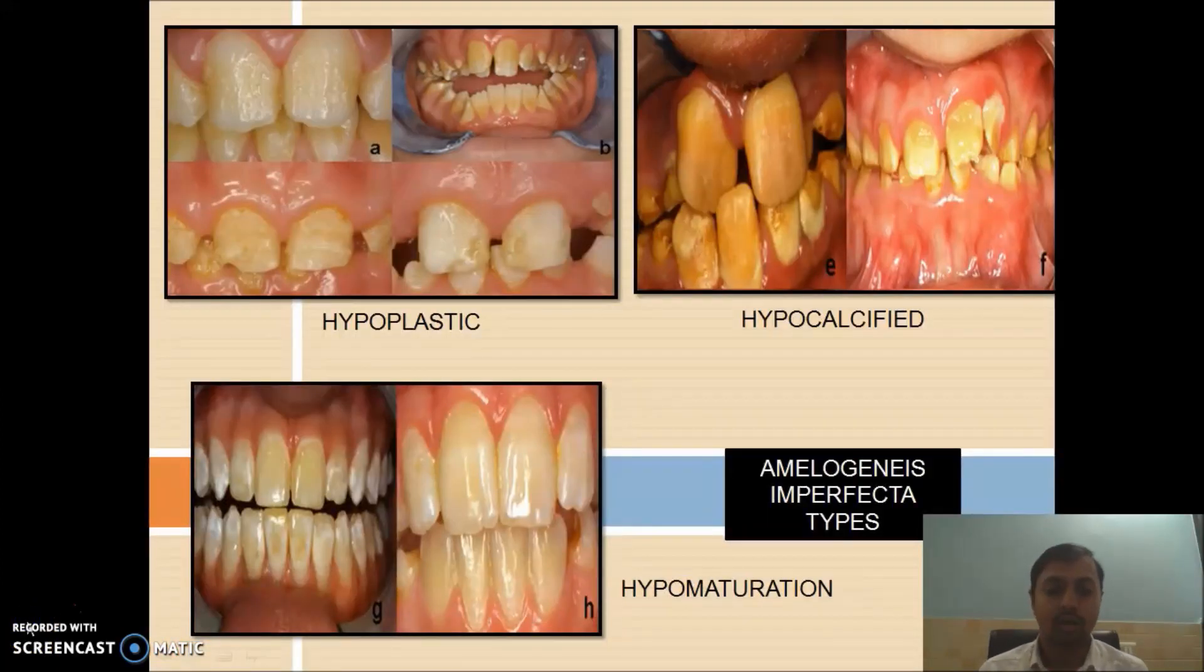Now we will see the types of amelogenesis imperfecta. First will be the hypoplastic type. In hypoplastic type, the enamel will get thin. The surface of the enamel can be either rough, it can be smooth, or it can be pitted. In hypocalcified type, the enamel will become lusterless, dull enamel. The color can be any: honey color, brown color, yellow color. In this stage, the enamel will get easily chipped off. In hypomaturation type, you can see the frosty appearance of the enamel, the opaque enamel. Most commonly it is seen in the incisal one-third of the tooth. Sometimes it is also known as snow-capped enamel.